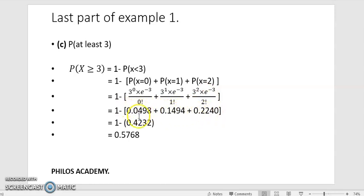Then you add the three things in the brackets together. When you add them together, you get 0.4232. So 1 minus 0.4232. When you subtract, you get 0.5768. That is the final answer for this.